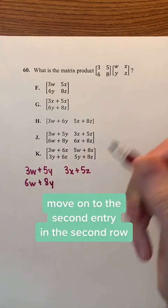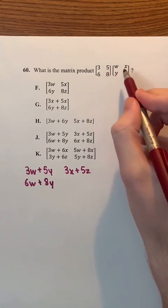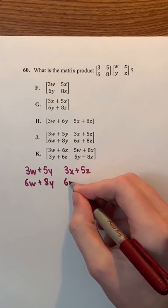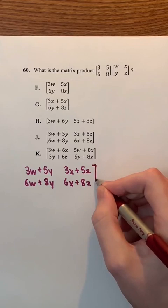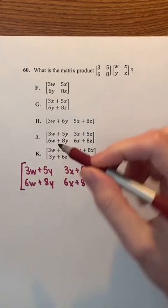Then, we're going to move on to the second entry in the second row by first multiplying 6 by x to get 6x. And then, we're going to add 8 times z, which is 8z. This result turns out to be the matrix product, which is j, so j is the correct answer.